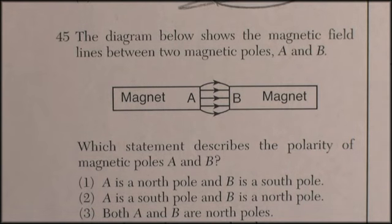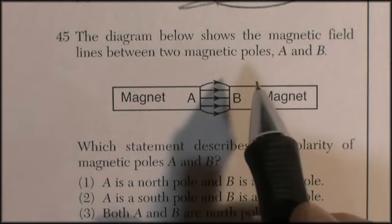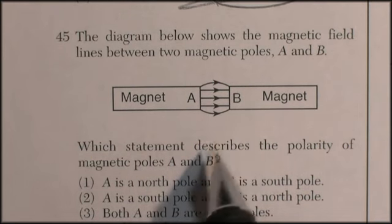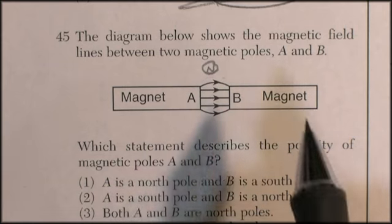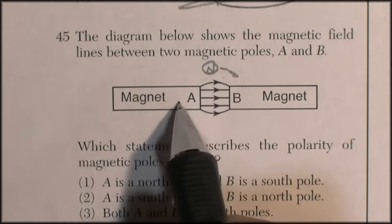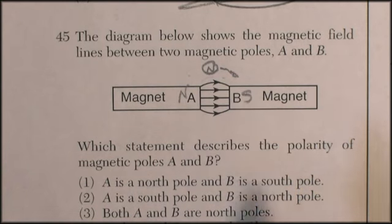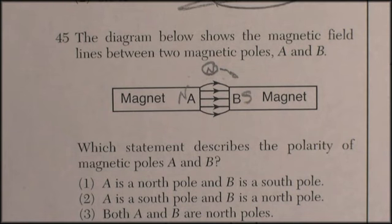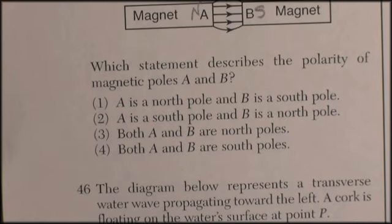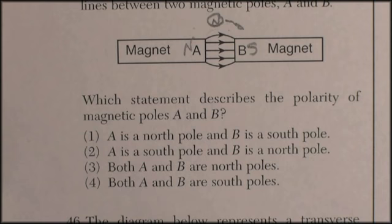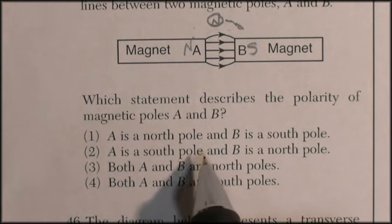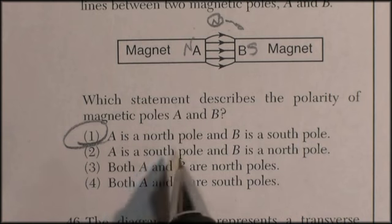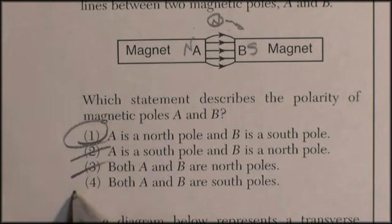Question 45: the diagram shows the magnetic field between two magnetic poles A and B. This is a vocabulary, memory type of question. You have to realize that magnetic fields are drawn in the direction that a north monopole would head. It would head away from a north and towards the south. That's the rule by convention. Which statement describes the polarity of magnetic poles A and B? A is north and B is south, and that looks good.